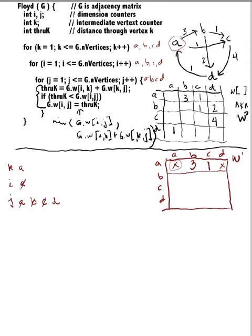I goes to B and J is A, going through the J-loop. The minimum from B to A is infinity, or B to A (infinity) plus A to A (infinity) — so that's no improvement. The shortest path from B to B: B to A is infinity and A to A is infinity, so that's a bunch of infinities — no improvement there.